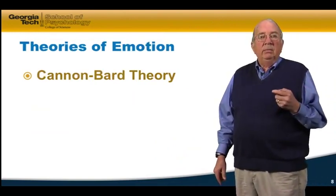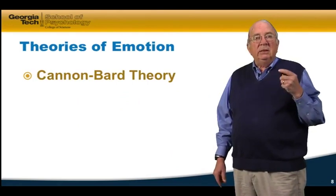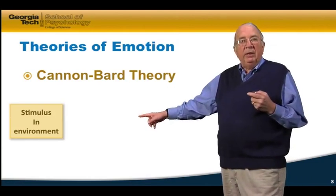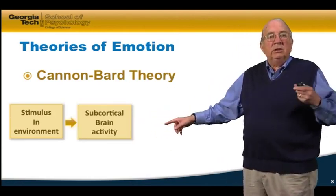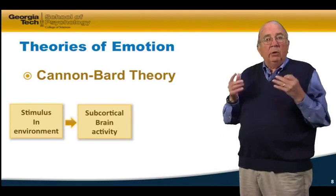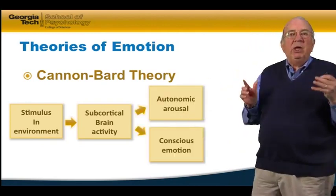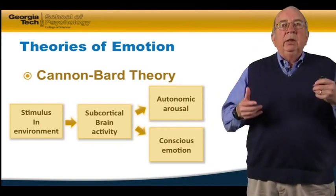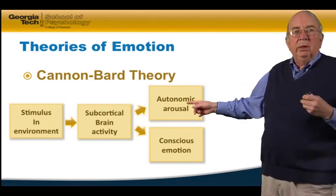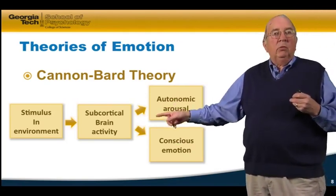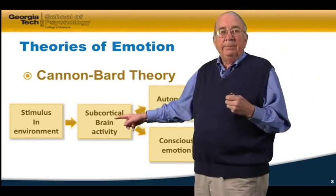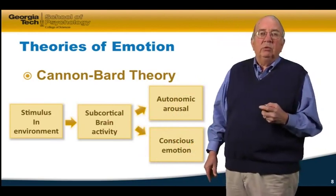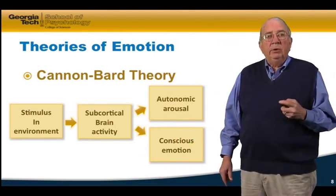The other theory is the Cannon-Bard theory. It says James-Lange was wrong. The stimulus in the environment that produces the emotional state causes subcortical brain activity. Then that simultaneously produces the conscious emotion and the autonomic arousal. So the emotion is not produced by the autonomic arousal — both are produced by the stimulus creating activity in the subcortical brain, really in the amygdala, which is the part of the brain controlled by emotion.